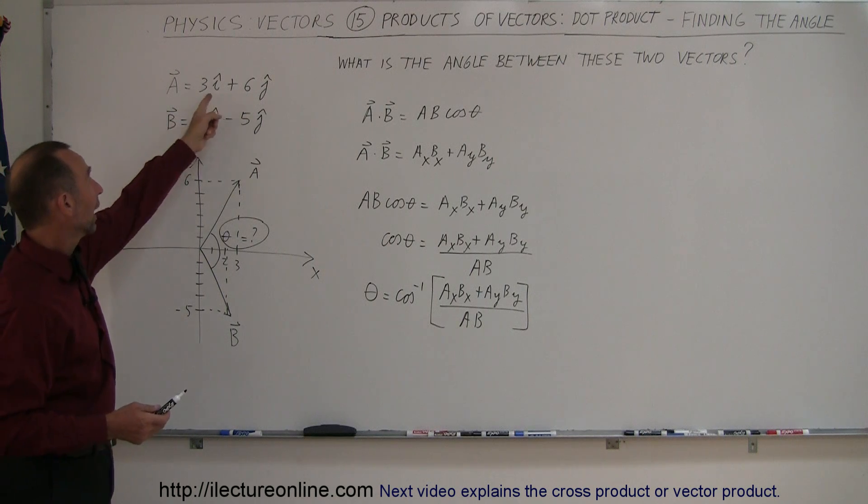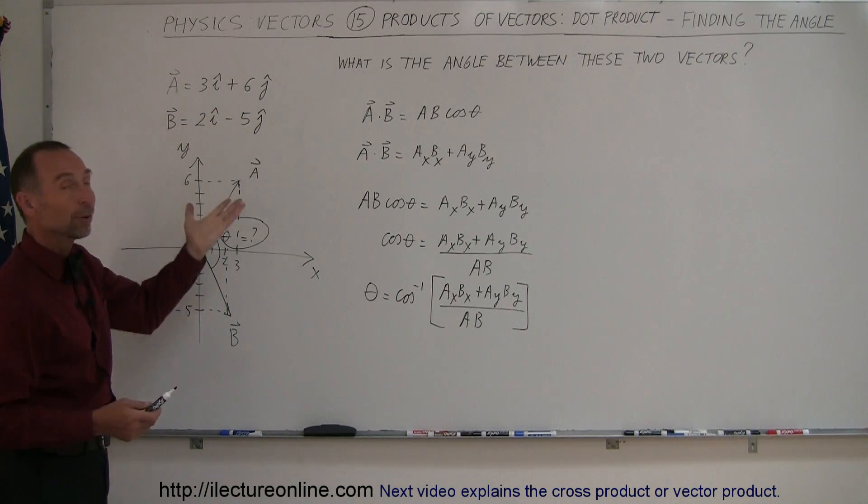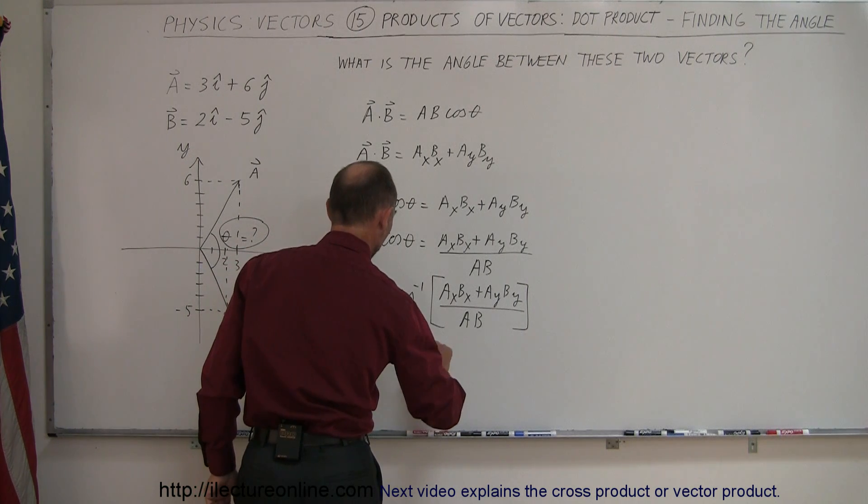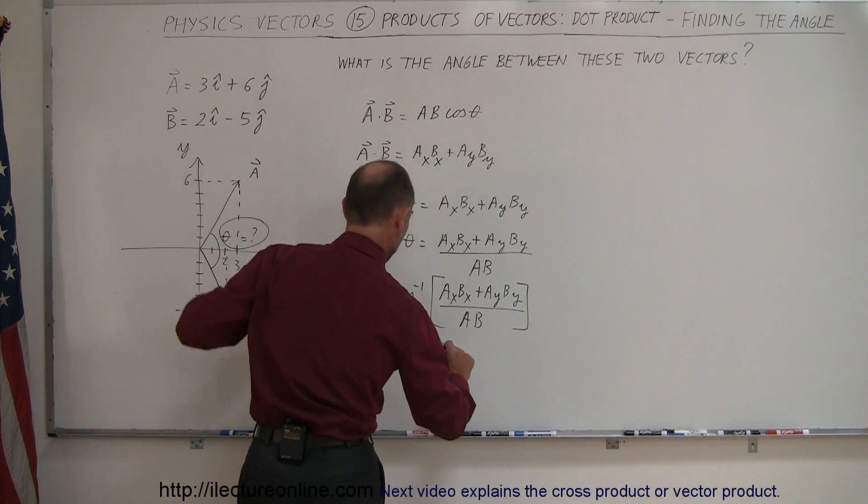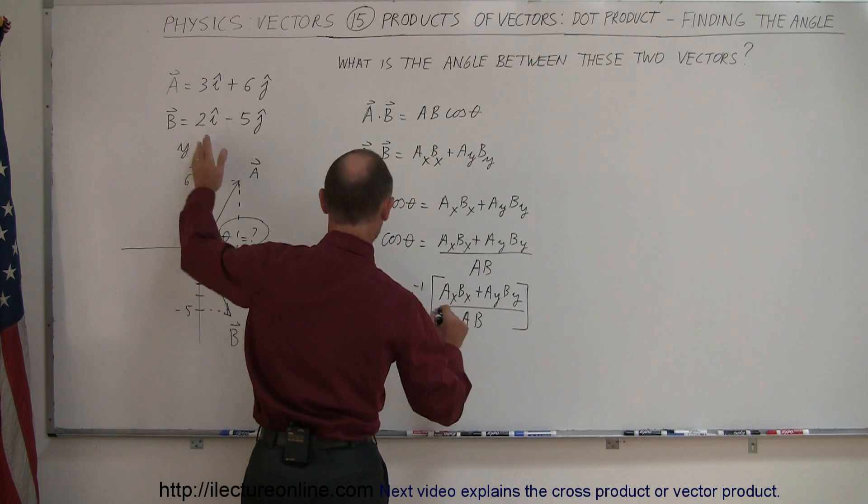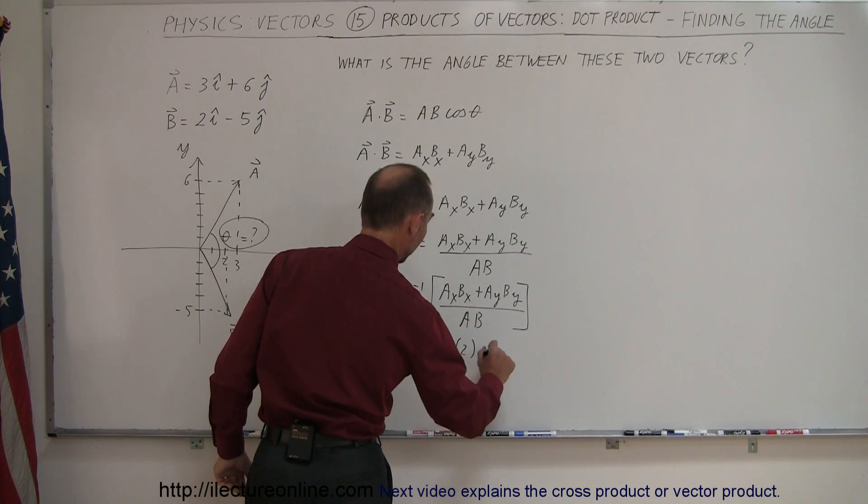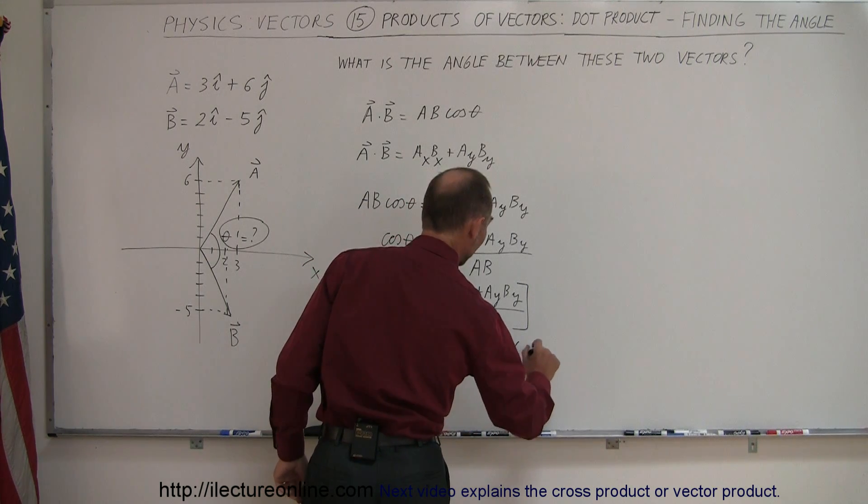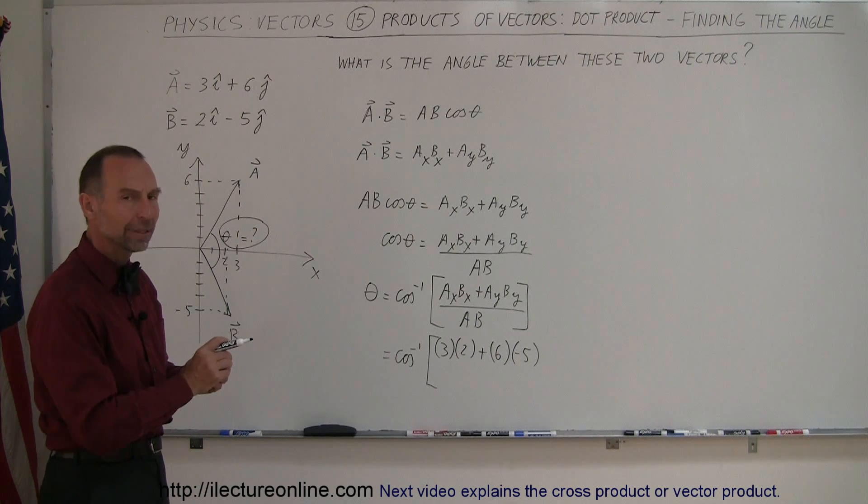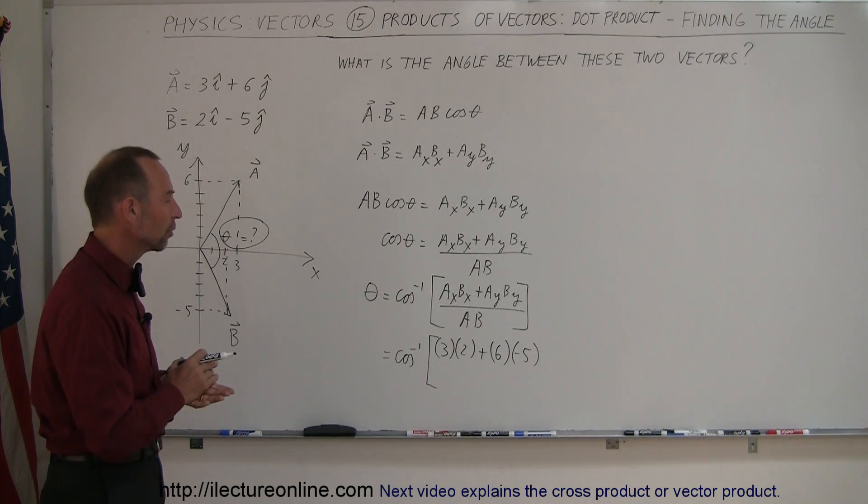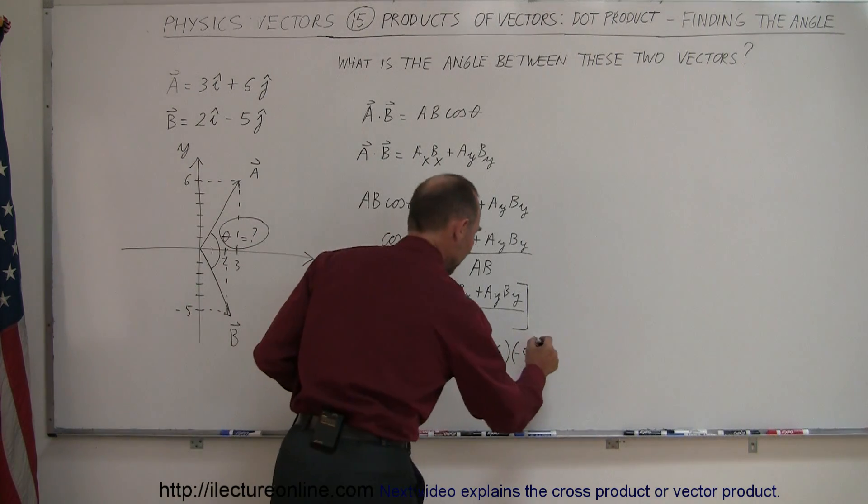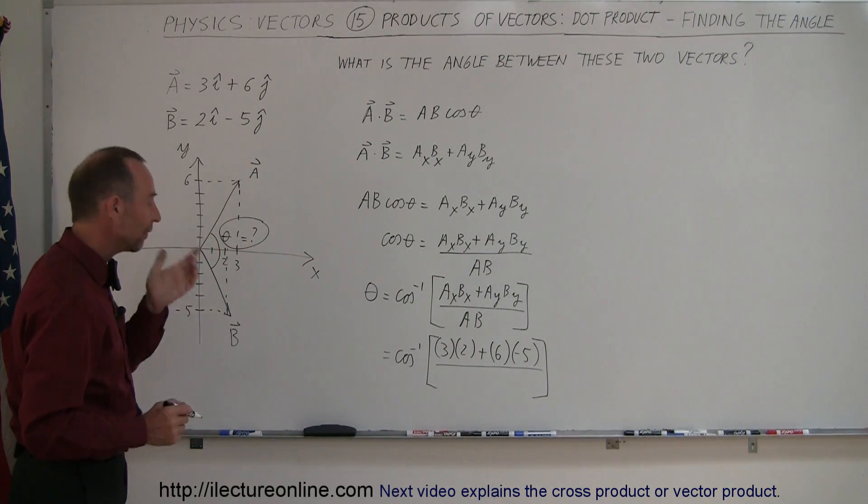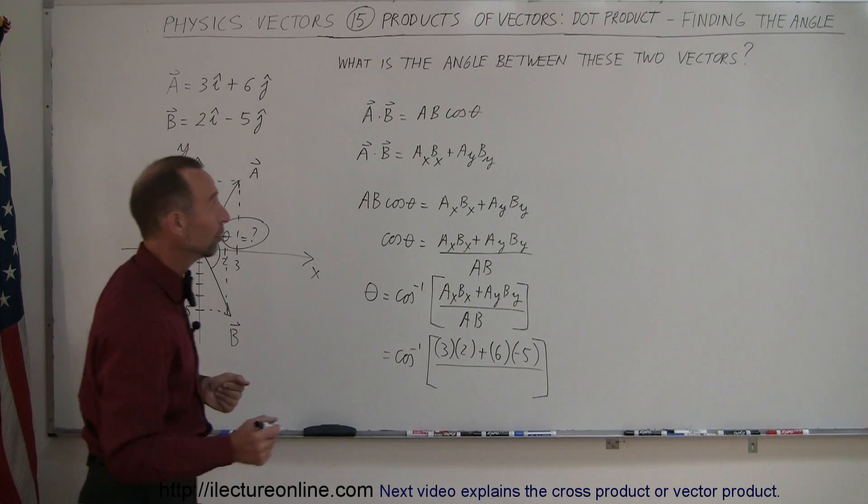We know AX and BX, AY and BY, we know what those numbers are. So we say this is equal to the arc cosine of AX is 3, BX is 2 plus AY which is 6 and BY is minus 5. Remember, when we deal with the dot products, we have to put the direction of the components as well, as well as the magnitudes. That would be minus divided by, now we need to know the magnitude of A and the magnitude of B. Remember how to find the magnitudes.